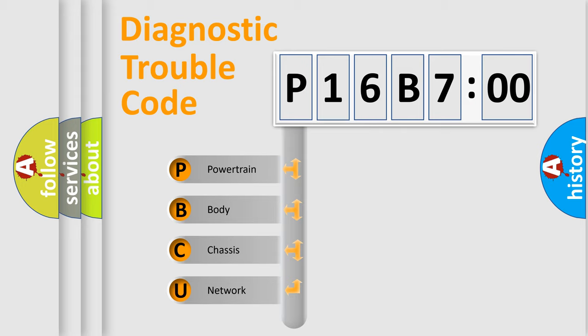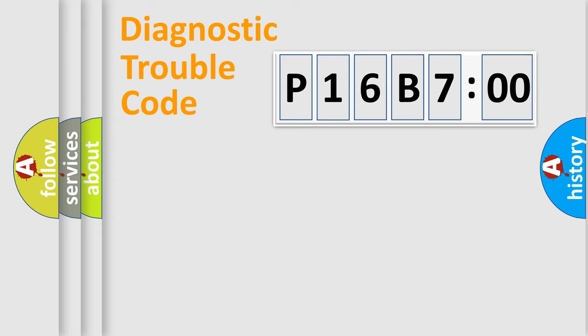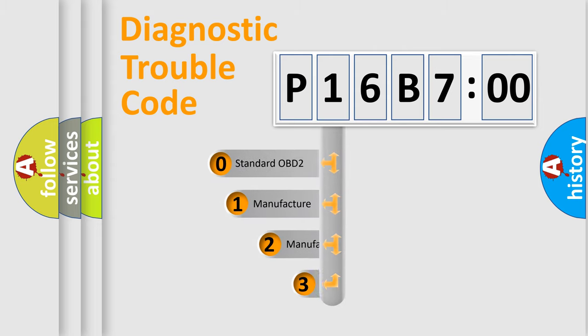We divide the electric system of automobile into four basic units: Powertrain, Body, Chassis, and Network. This distribution is defined in the first character code.